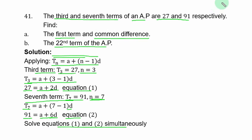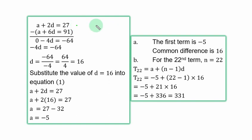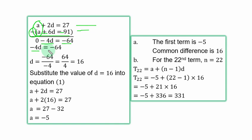Using the elimination method, subtract equation 1 from equation 2 to eliminate a. Opening the bracket with the minus sign: 2d minus 6d gives minus 4d, and 27 minus 91 gives minus 64. Therefore minus 4d equals minus 64, and dividing both sides by minus 4 gives d equal to 16.